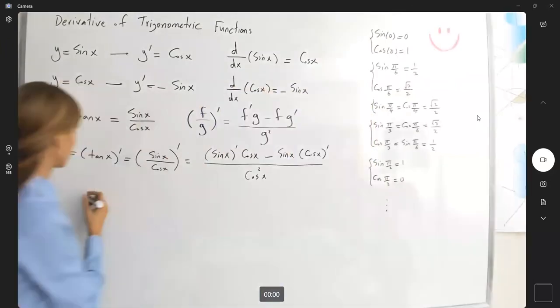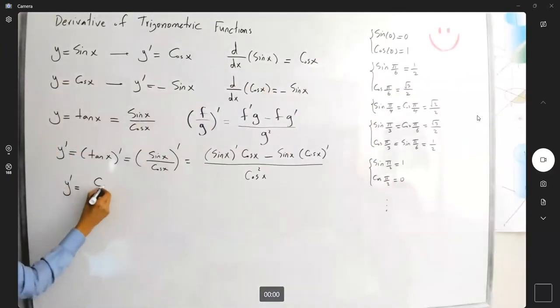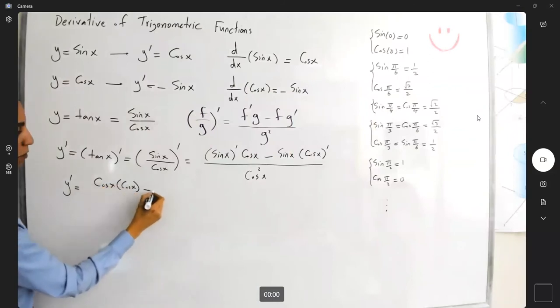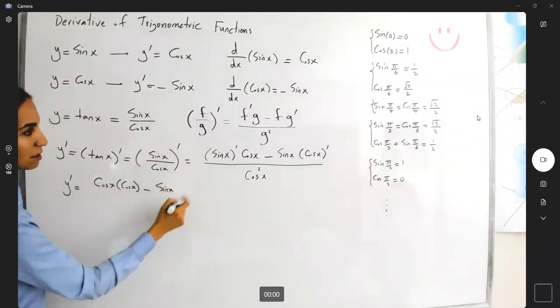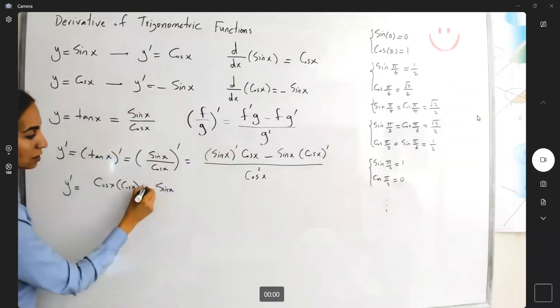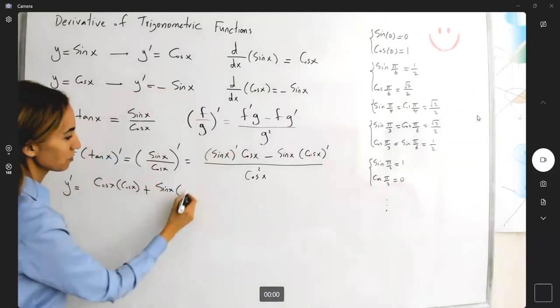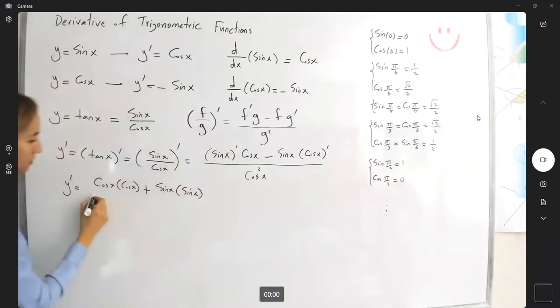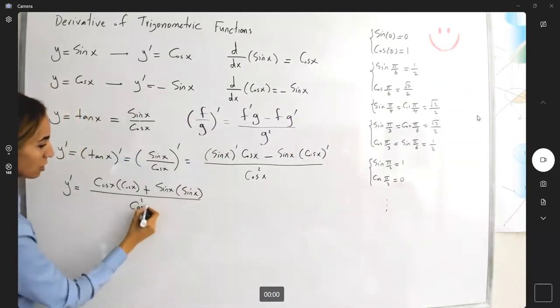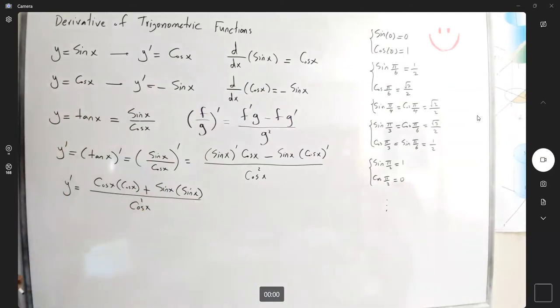So y prime is equal to cosine x times cosine x minus sine x times negative sine x divided by cosine to the second power. So y prime is cosine squared of x plus sine squared of x divided by cosine squared of x.